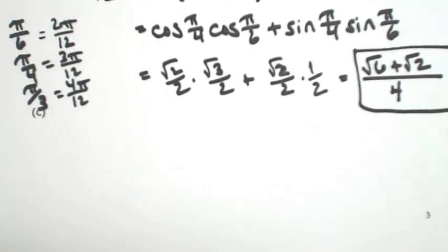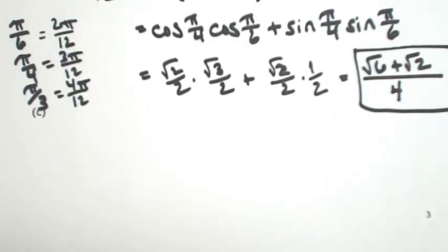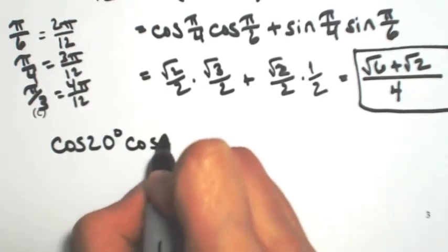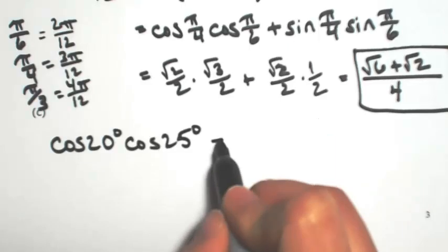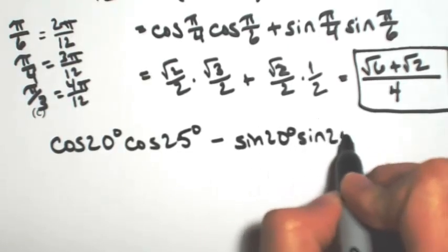Okay, one more. Let's say you're given the expansion and you want to go back to where it came from. For example, let's say I have the cosine of 20 degrees times the cosine of 25 degrees minus the sine of 20 degrees sine of 25 degrees.